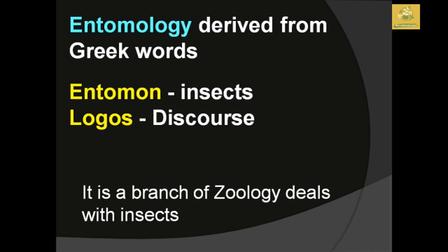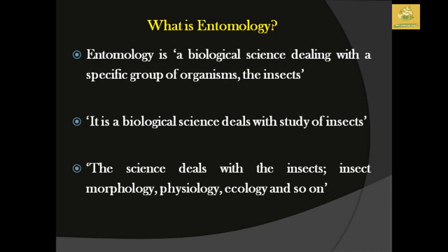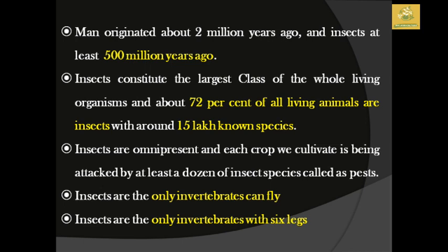Entomology is derived from two Greek words: 'entomon' plus 'logos'. Entomon means insects and logos means discourse. Entomology is said to be a branch of zoology which deals only with insects. It is a biological science dealing with a specific group of organisms known as insects — covering insect morphology, physiology, ecology, and so on.